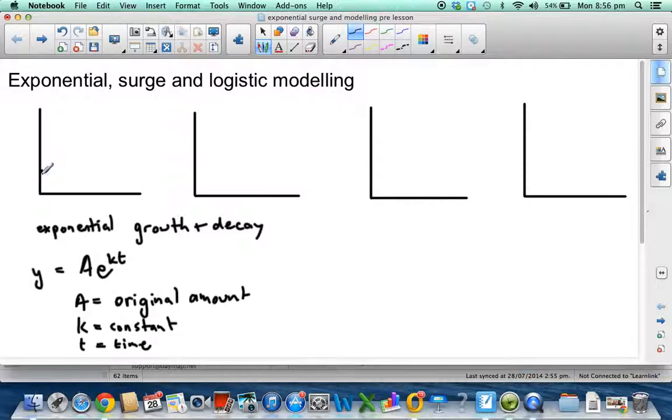Now, they can go one of two ways. They can either start and go up or they can start and go down. Again, as we said before, growth of bacteria, radioactive decay. Again, this is the original amount so this is what we class as A here.